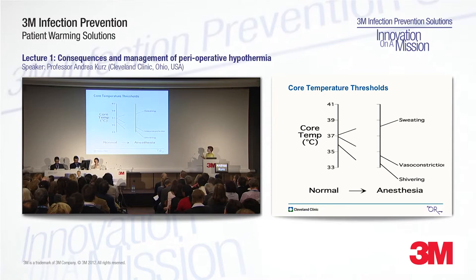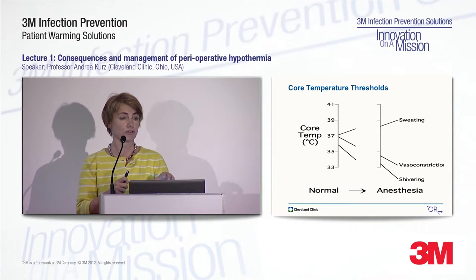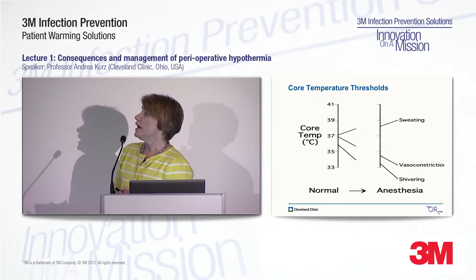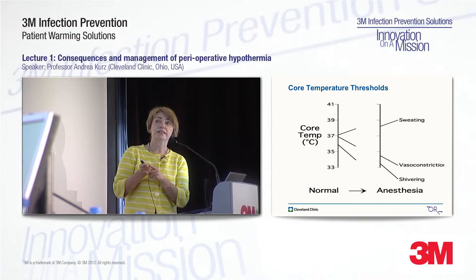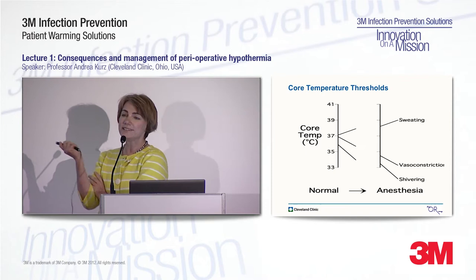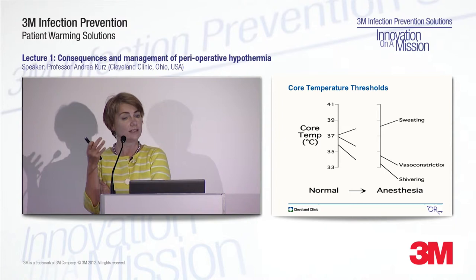Those responses are: with an increase in core temperature, we start to sweat. With a slight decrease in core temperature, we get peripheral vasoconstriction — specifically arteriovenous shunt vasoconstriction that happens mainly in the periphery. And if the core temperature drops even further, we start to shiver. The range between sweating and vasoconstriction is called the interthreshold range, and it is usually tiny — 0.2 to 0.3 degrees in unanesthetized patients.